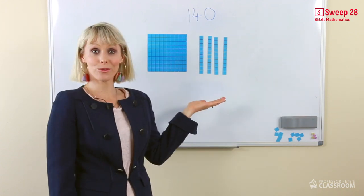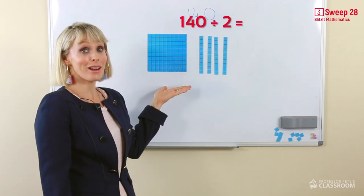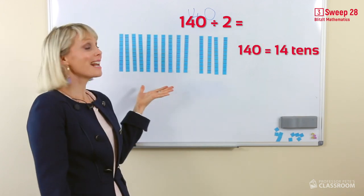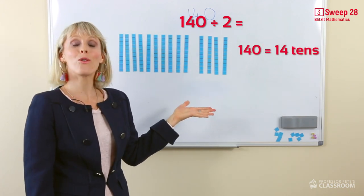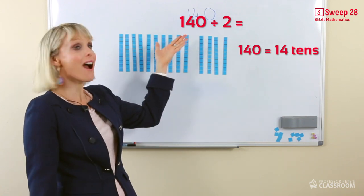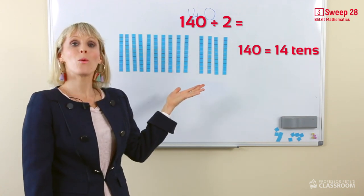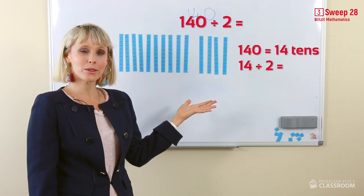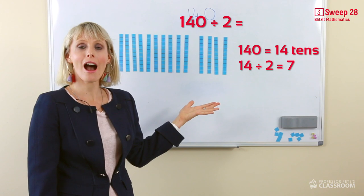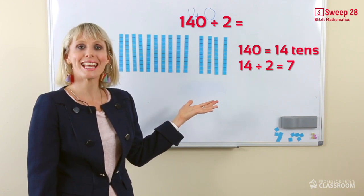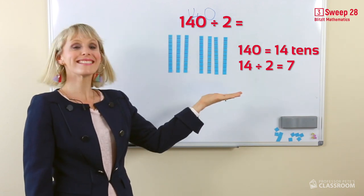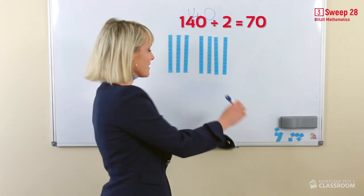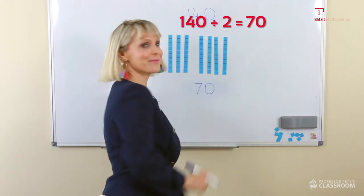Now we have 140. Uh oh. We need to regroup. We have regrouped. Now we can easily see the 14 tens in the number 140. We are halving. So half of 14 equals 7. So half of 14 tens equals 7 tens. And we write 7 tens, 70.